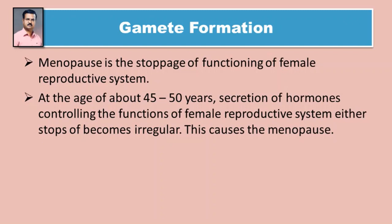Manje stri prajanan sansthece kaarya vayaparatve thambanyaala rajo nivritti ase mhanataat. At the age of about 45 to 50 years, secretion of hormones controlling the function of the female reproductive system either stops or becomes irregular. This causes menopause. Manje saadharanpane 45-50 varshaat strichya shariraat prajanan sansthece kaarya niyantrit karanaarya samprerakaanche sravane viskhalit hote kiva thambate, aani ya mule rajo nivritti yete.